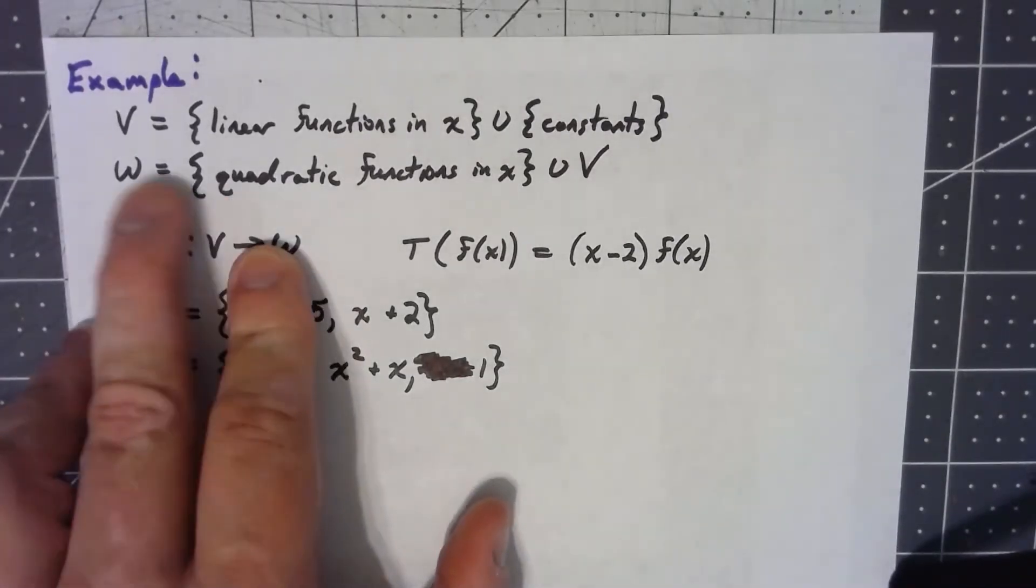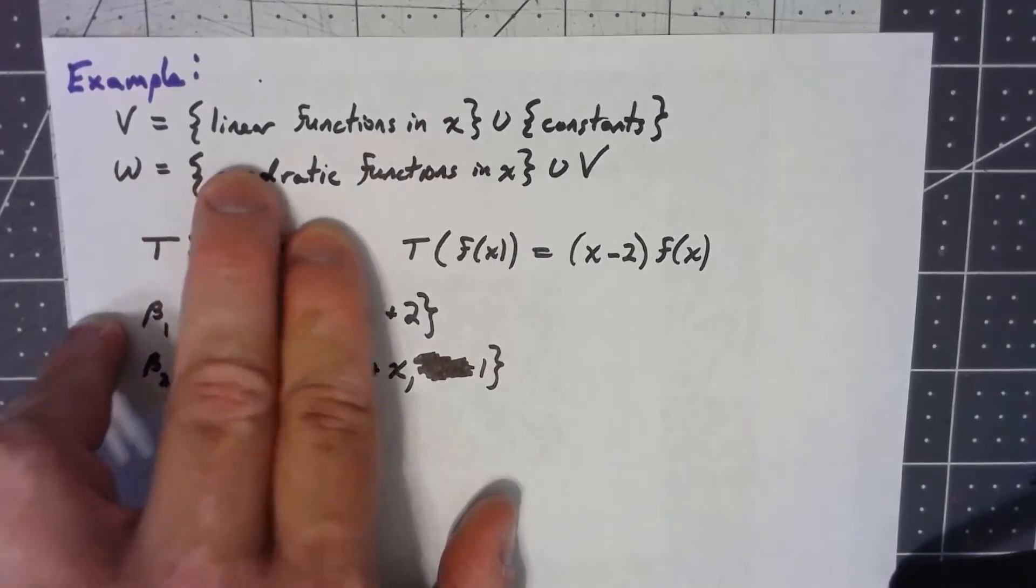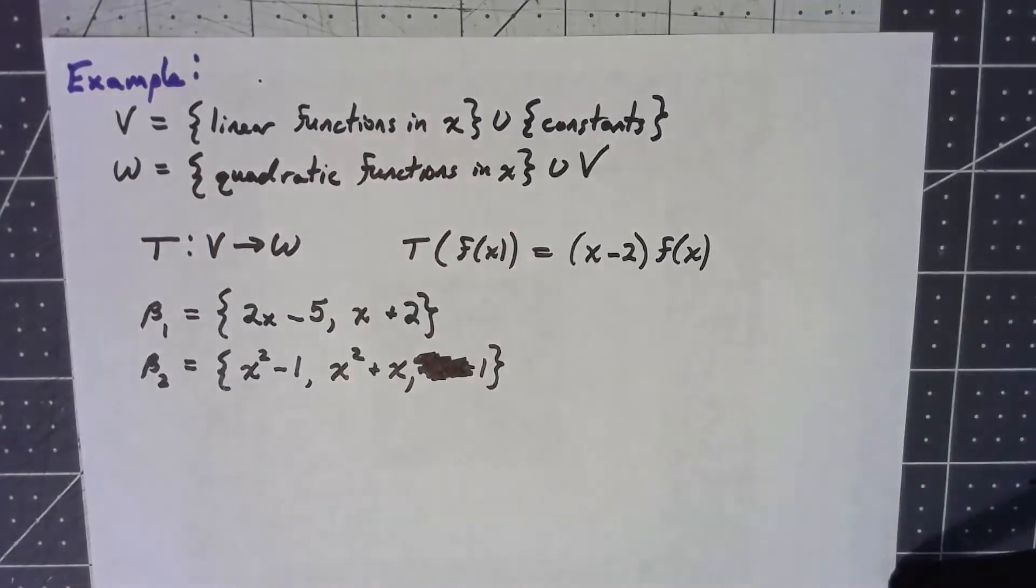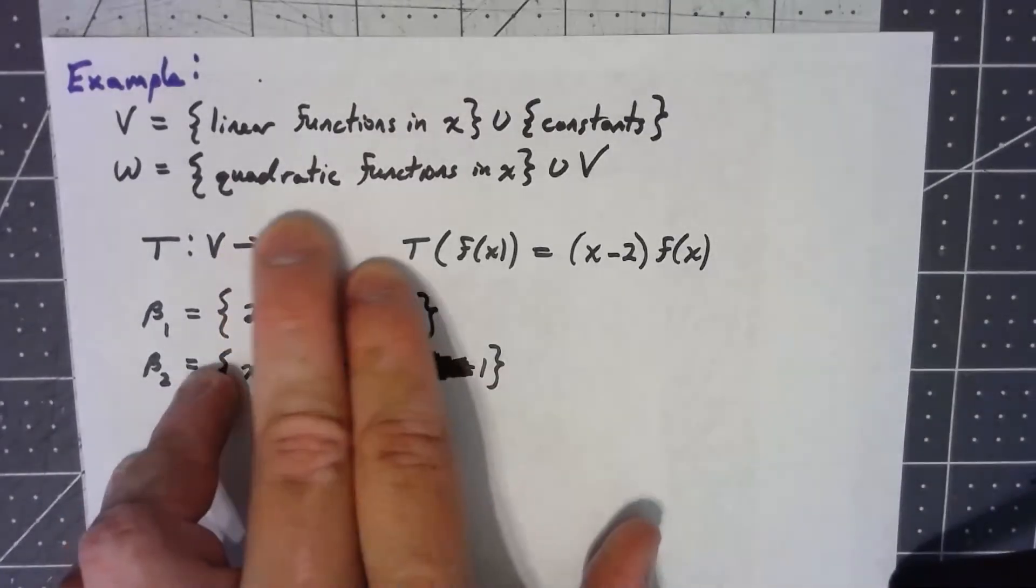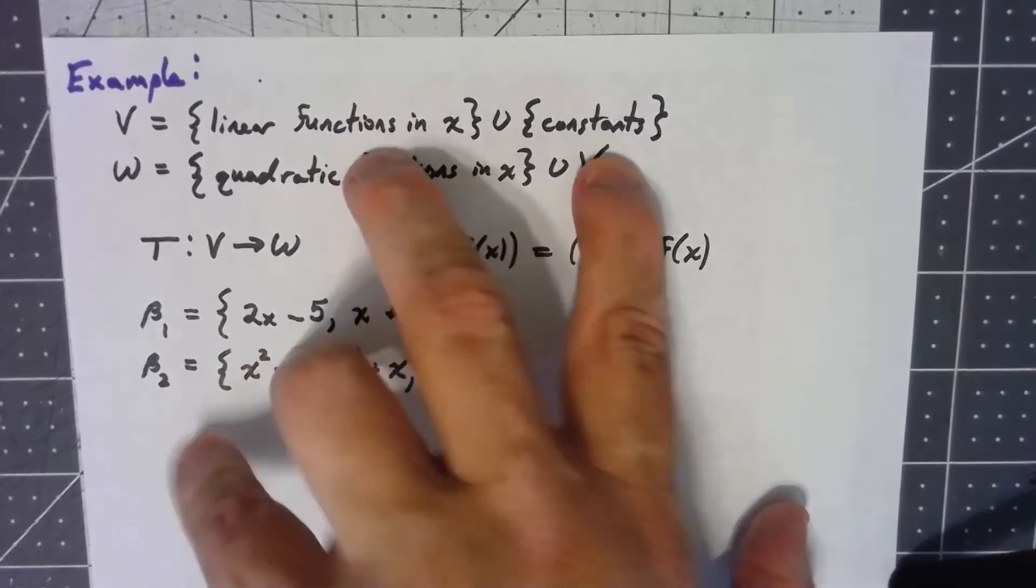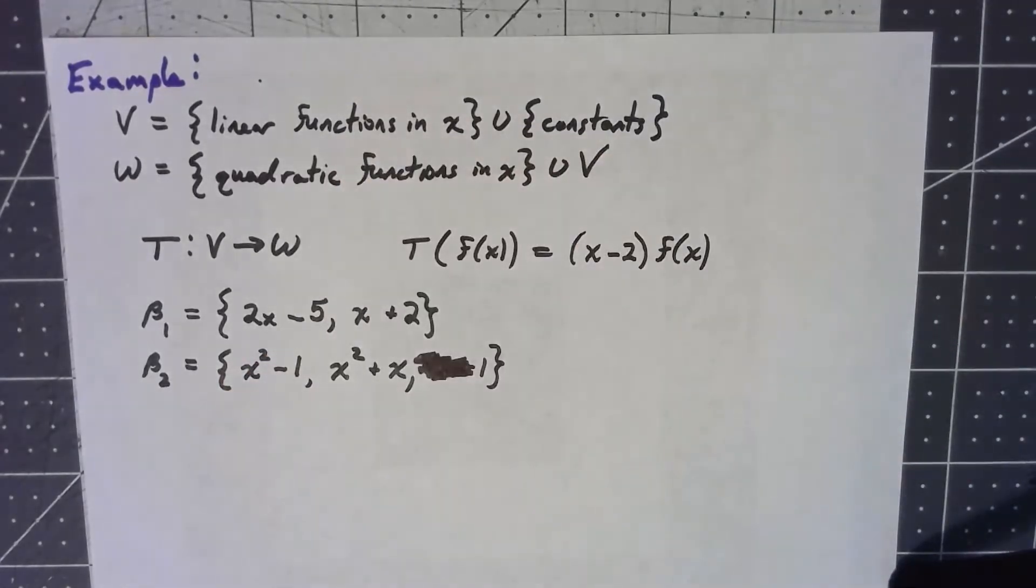V is the set of linear functions in x, and to make it a vector space, you have to have everything lower degree as well, so not just linear functions but constants including zero. W consists of quadratic functions, and we have to include all the linear functions and constants, so I'll say union V there.